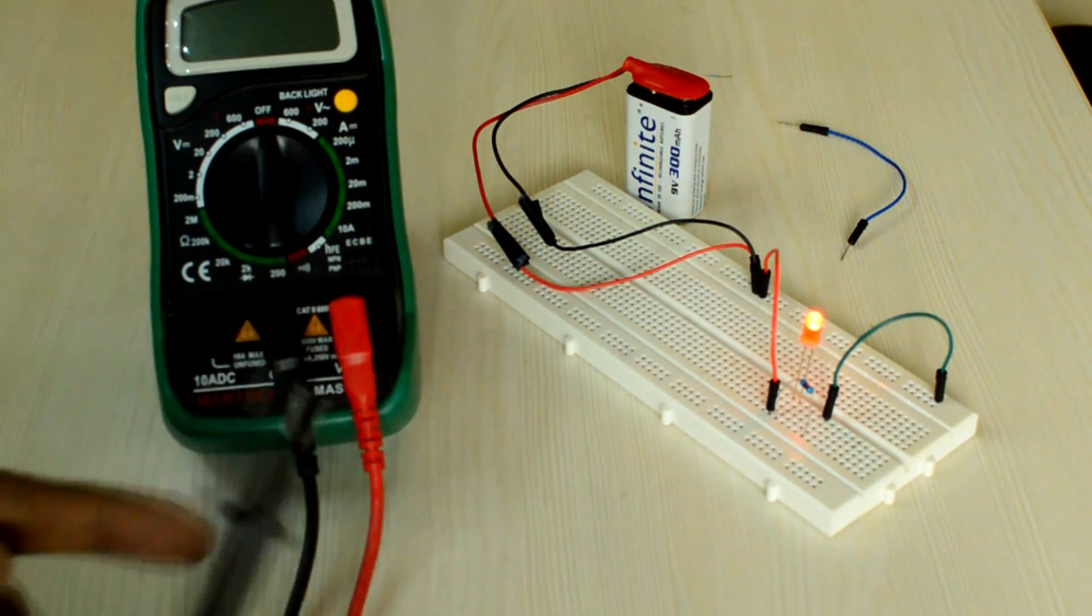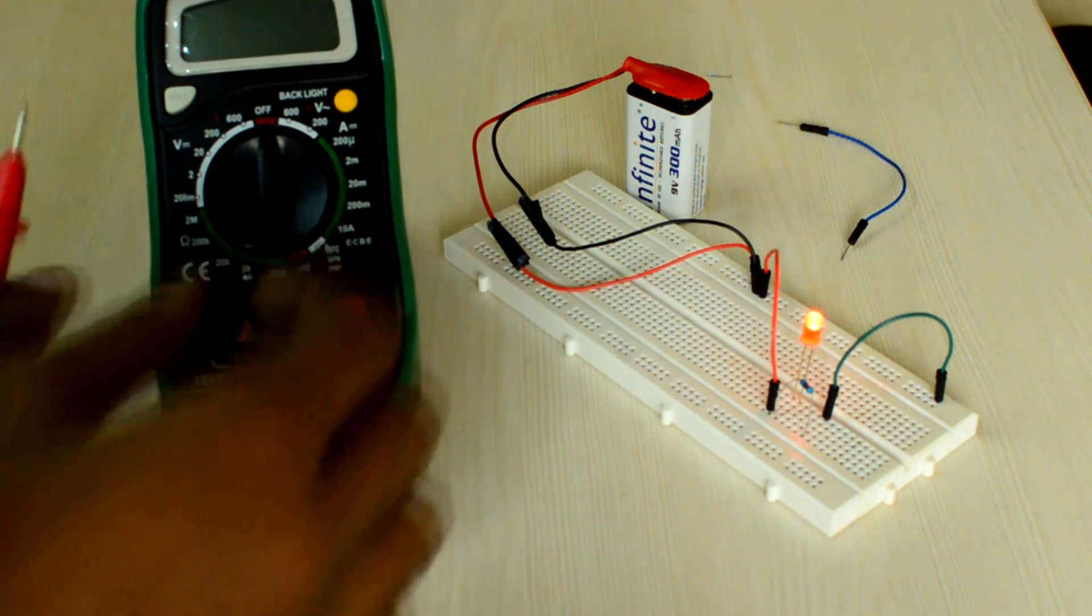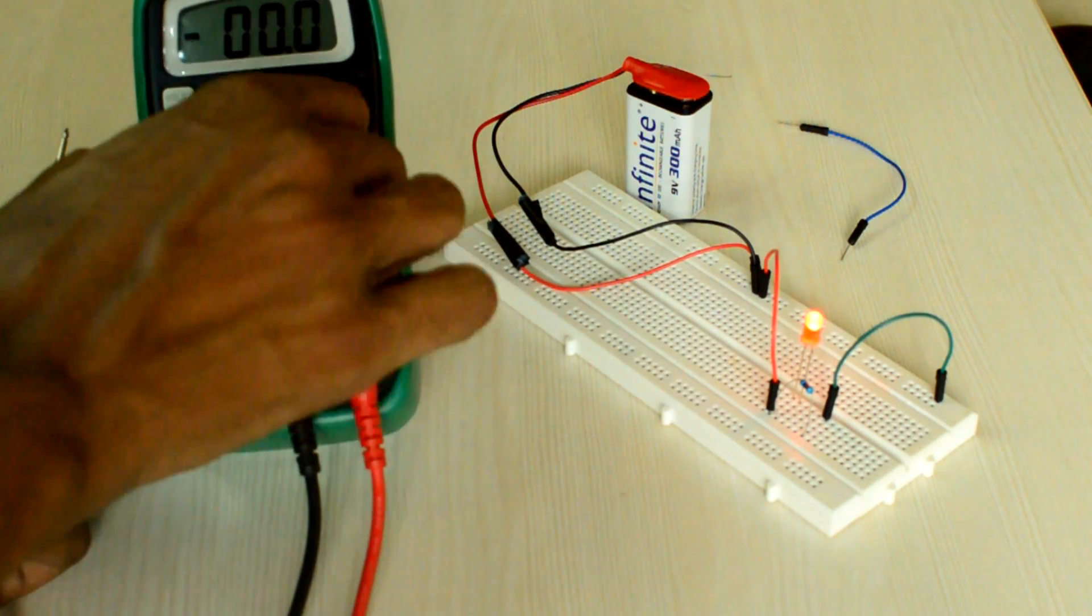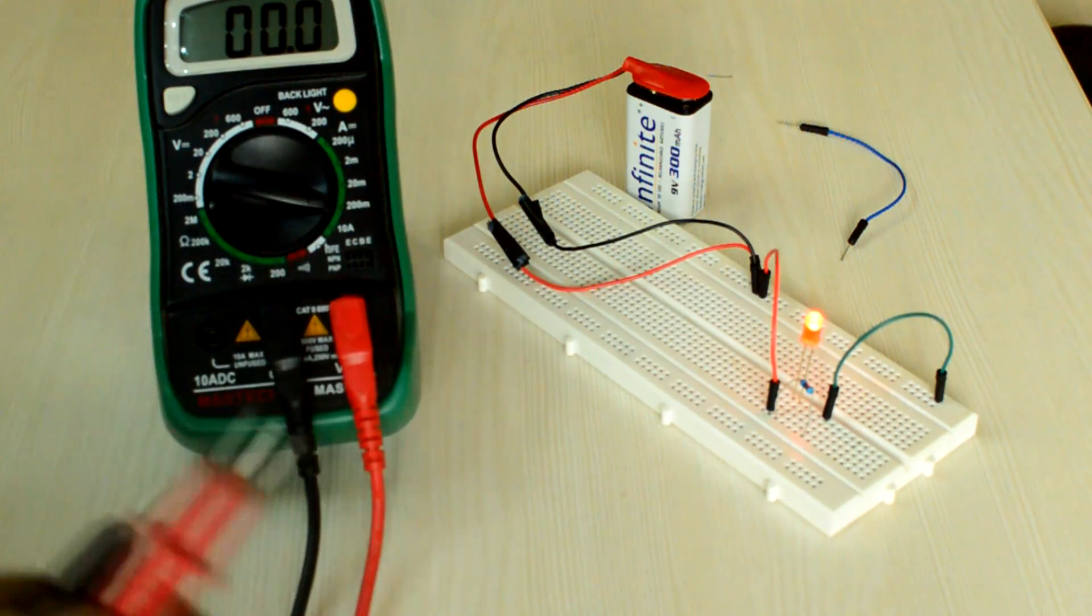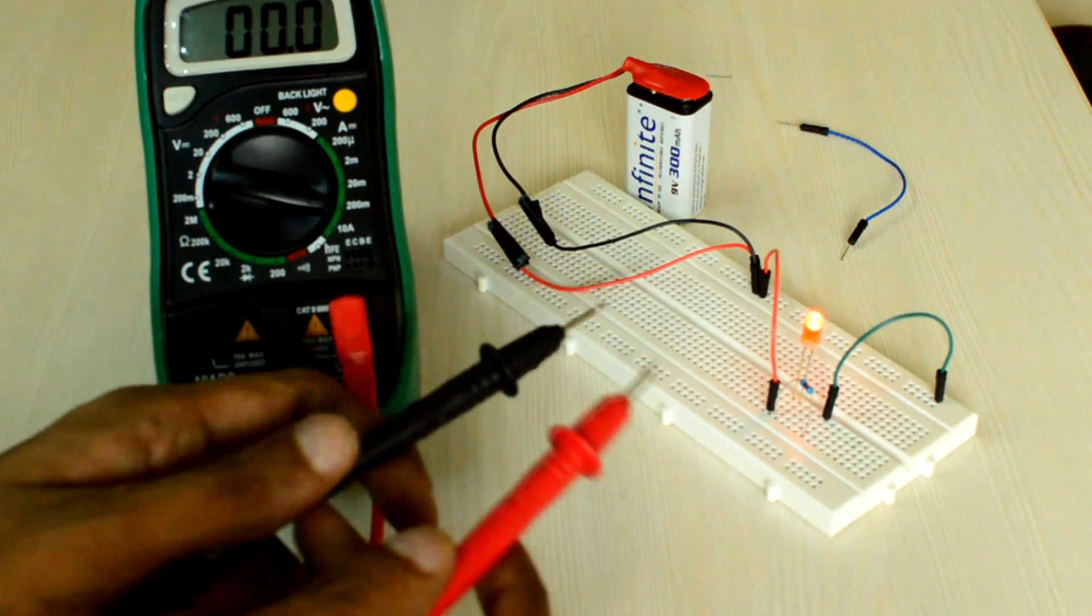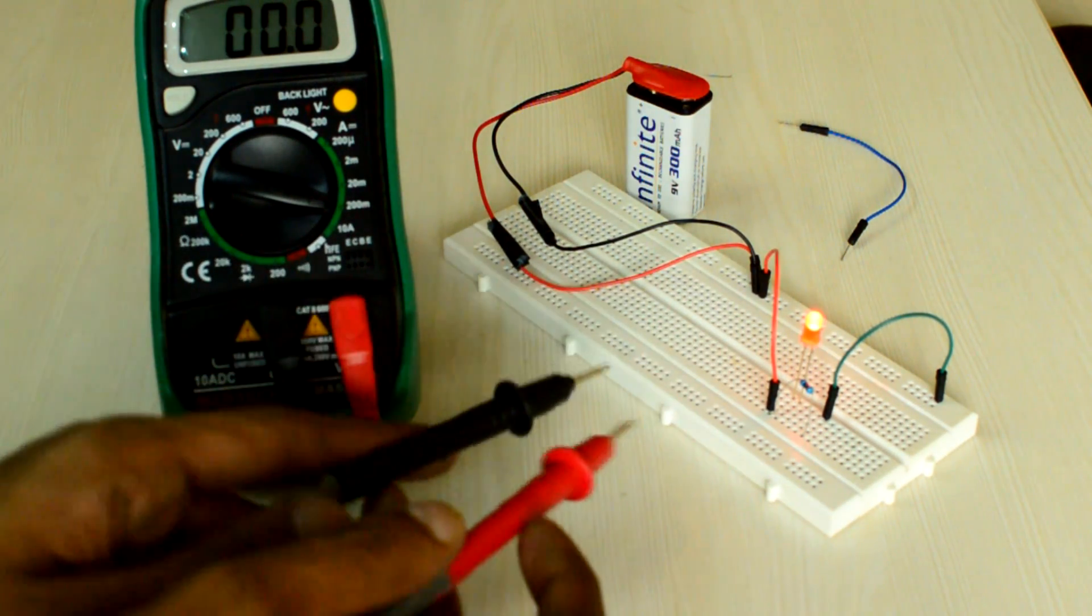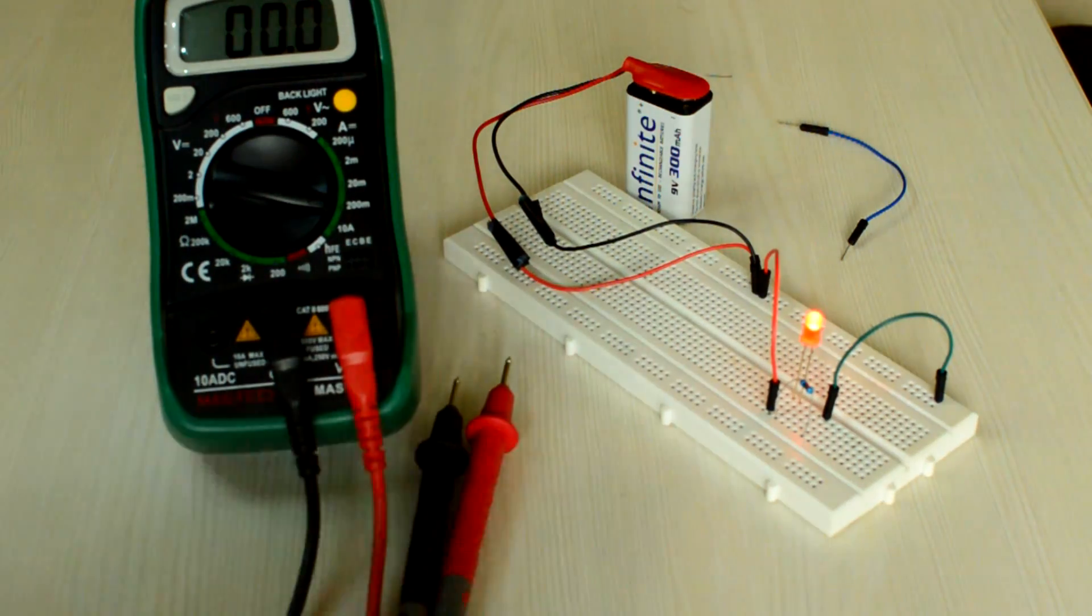Now let us measure the current using the DMM. Let us set the dial to 200mA. Unfortunately, you cannot find the current by just connecting the pins of the DMM across the components. You have to break the circuit to connect the DMM in series.